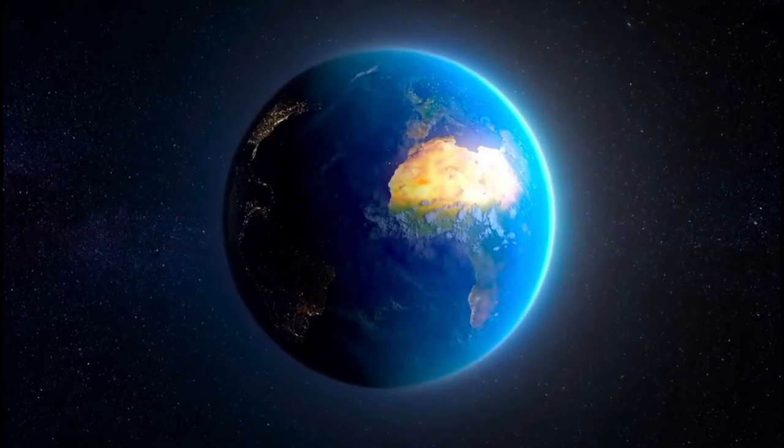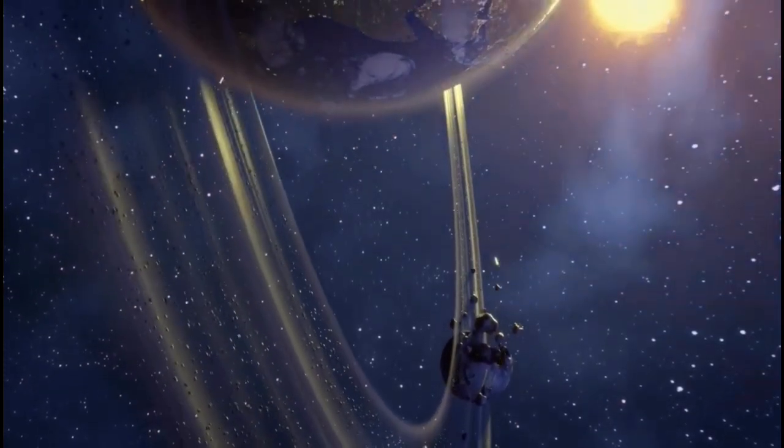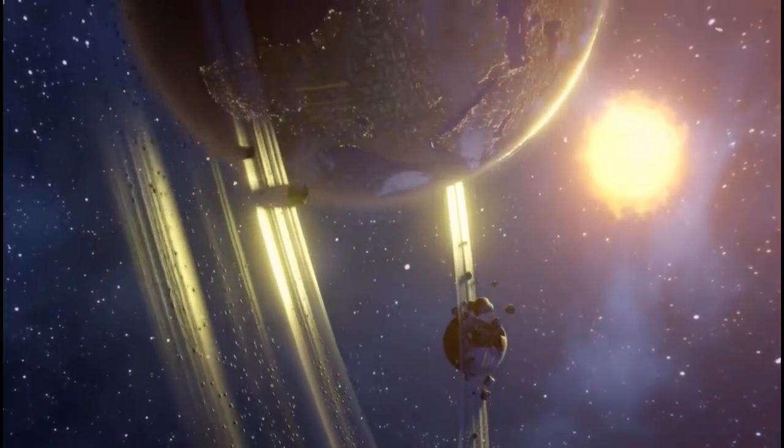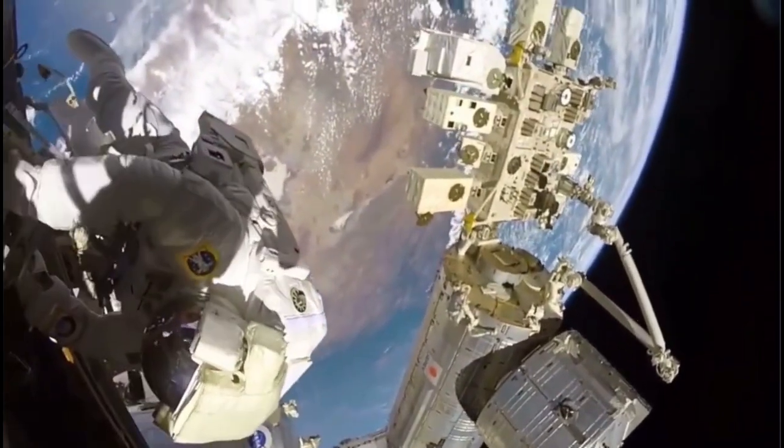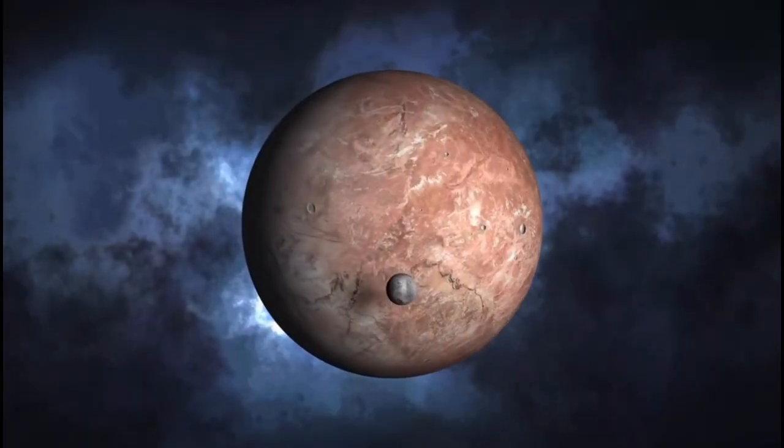Despite the swirling rumors, the mission pressed forward. On a crisp morning at Cape Canaveral, Horizon Sentinel roared to life atop a Falcon Heavy rocket, its trajectory meticulously plotted to take it on a years-long journey past Jupiter and Saturn before reaching the Kuiper belt. The world watched as the spacecraft disappeared into the blackness, carrying humanity's curiosity toward the unknown.